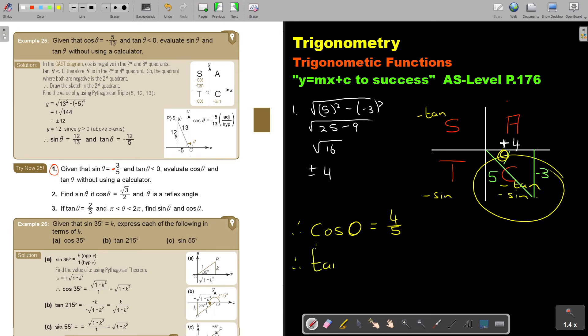Therefore tan θ equals, tan is opposite over adjacent, so negative 3 over 4. Okay, and don't forget your negative there because it's under, not top. And that negative goes with the 3 in this case. Okay, and that's how you do it.